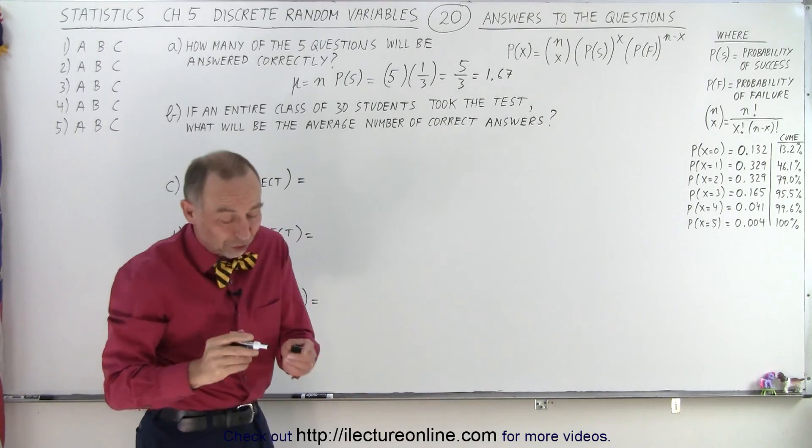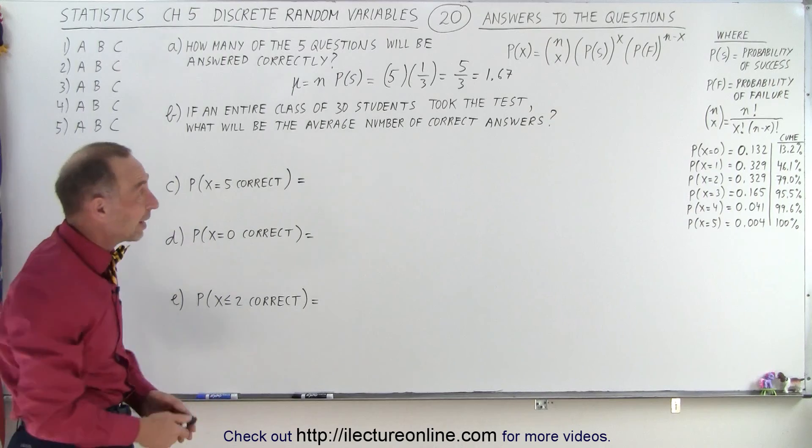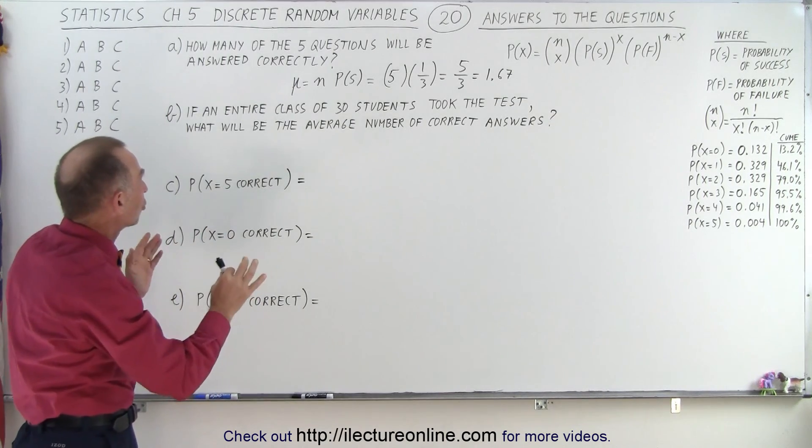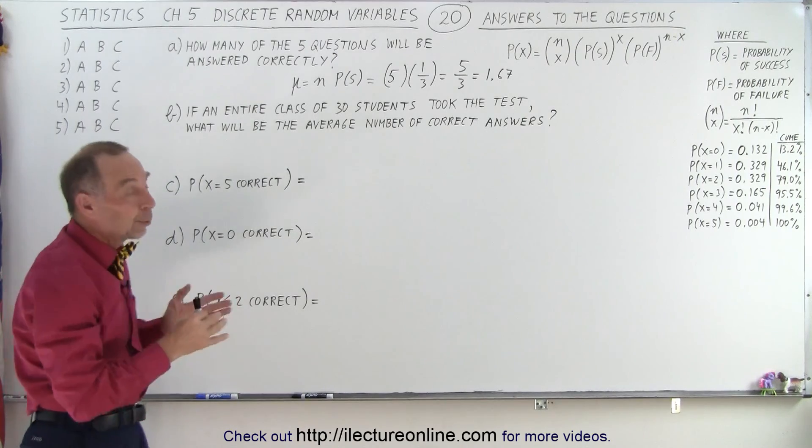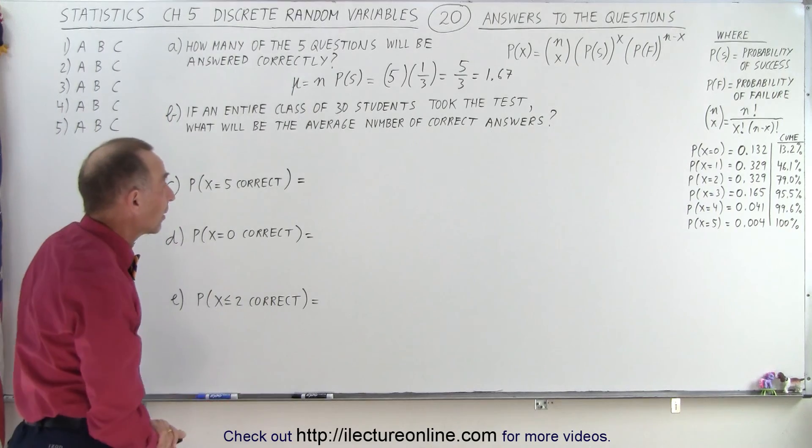Now notice of course there's no such thing as getting 1.67 questions correct. It's either 0, 1, 2, 3, 4 or 5. But on average it is expected we would get 1.67 questions correct. So most likely it will be 1 or 2 questions.